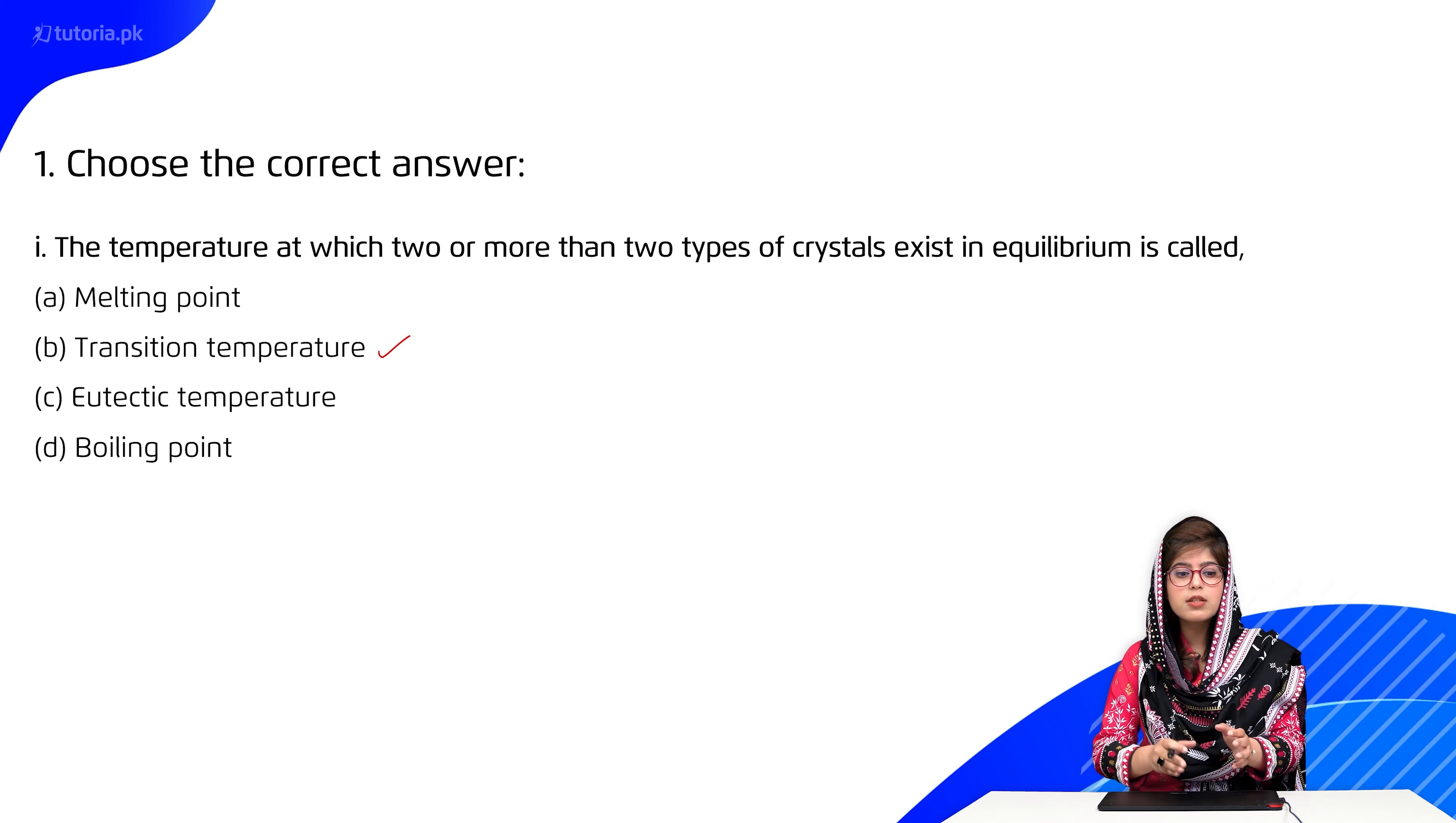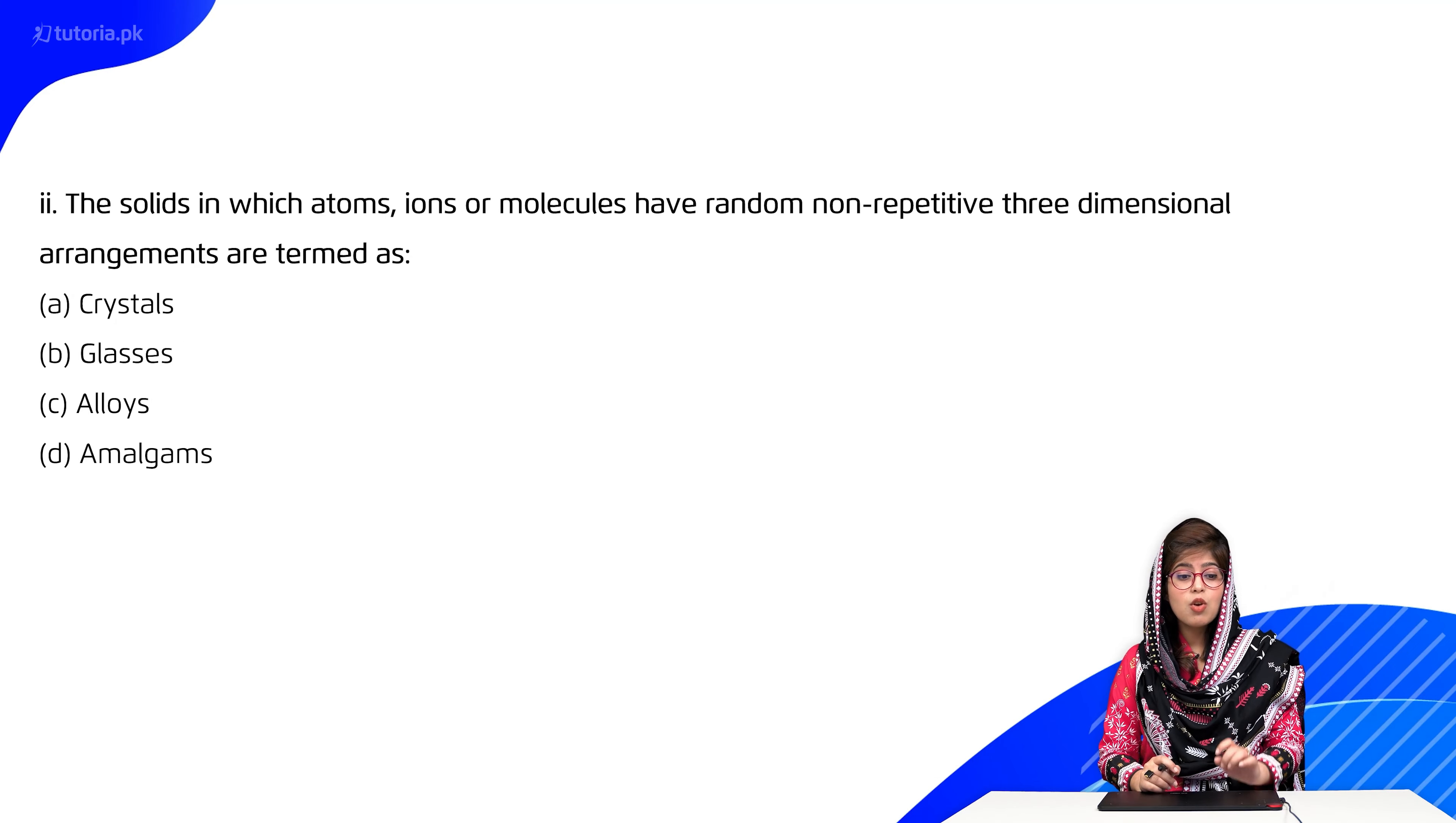Number two: The solids in which atoms, ions or molecules have random non-repetitive three dimensional arrangements are termed as: A) crystals, B) glasses, C) alloys, D) amalgams. Non-repetitive baat hoi hai, random non-repetitive.